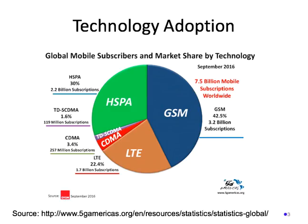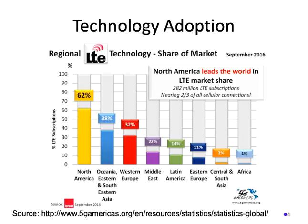Looking at the technology adoption, GSM is still used quite prevalently. This data from 2016 shows that there are 3.2 billion subscribers that use GSM, whereas LTE only has 1.7 billion subscriptions. If we look at the distribution of technologies among different markets, we see that North America leads the world in LTE market share, but other parts of the world — for instance Europe, the Middle East, and Africa — have very little LTE penetration.